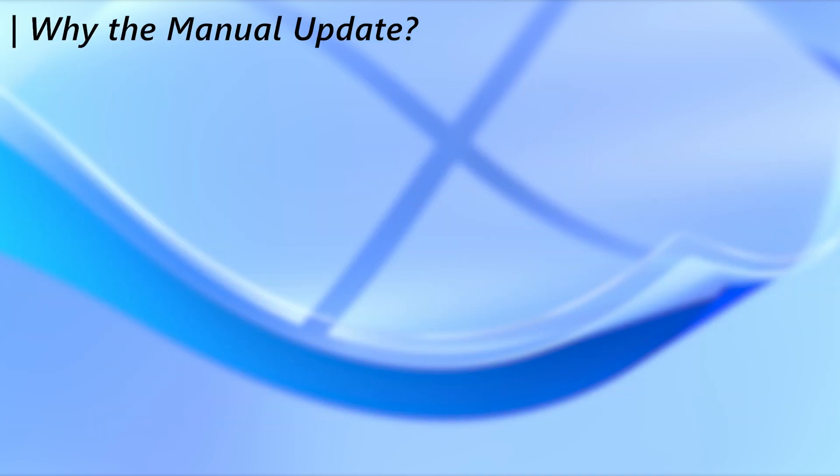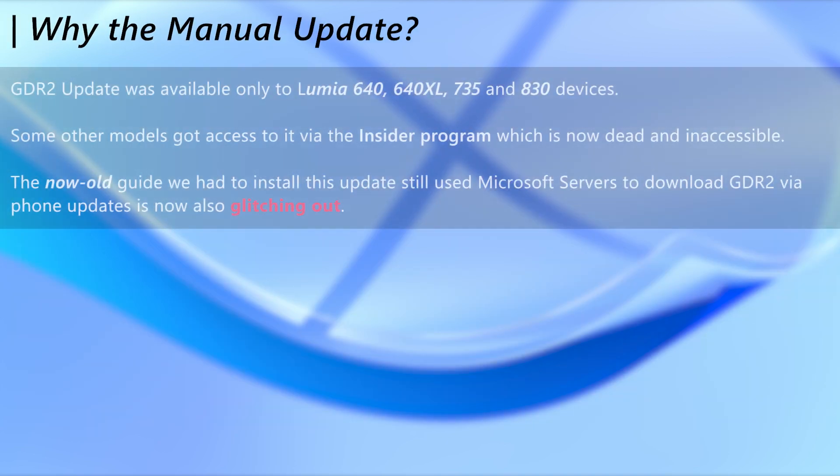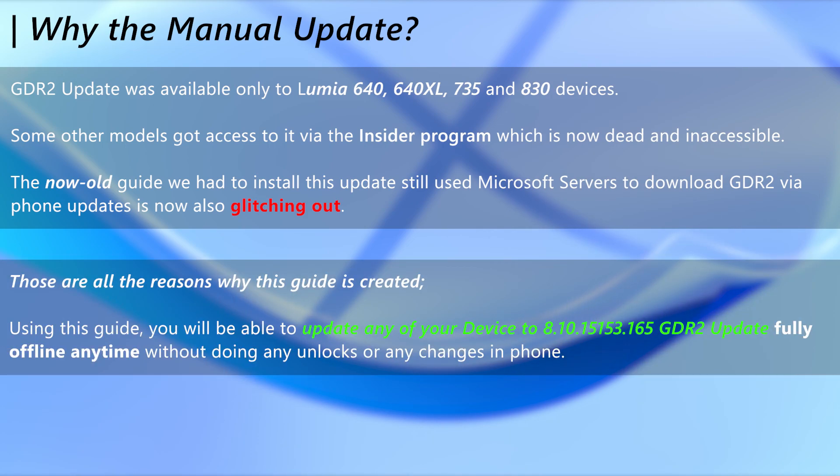But why the manual update? The GDR2 update was only officially available to Lumia 640, 640XL, 735, and 830 devices only. All the other ways to get this build on other devices are now dead or bugged. That is why this guide is created — using this guide you will be able to get your device to the GDR2 update fully offline.